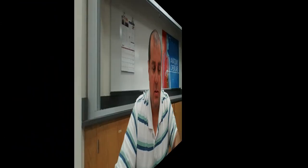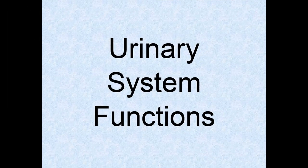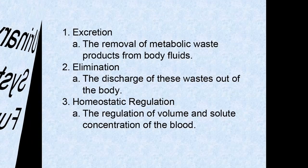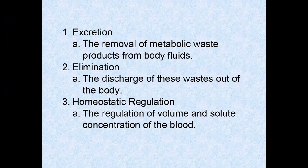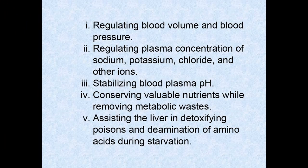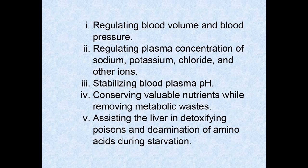The urinary system has the major functions of excretion — the removal of metabolic waste products from body fluids — and elimination, the discharge of those wastes out of the body. The urinary system also has a third major function: homeostatic regulation of the volume and solute concentration of blood. Essential to such homeostatic regulation is regulating blood volume and blood pressure by adjusting the volume of water lost in urine.